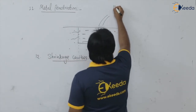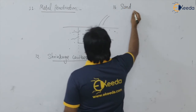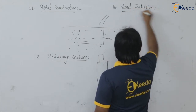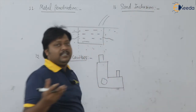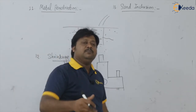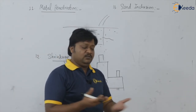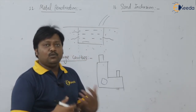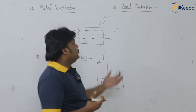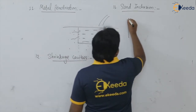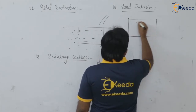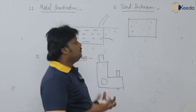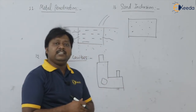Then we are having the sand inclusion defect. Whenever loose sand is present in the mold, the molten metal has an impact on this loose sand and the sand gets eroded. This sand gets mixed with the molten metal, producing the sand inclusion defect — whenever sand is added into the liquid molten metal, producing the sand inclusion.